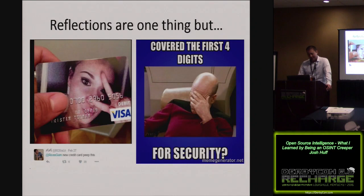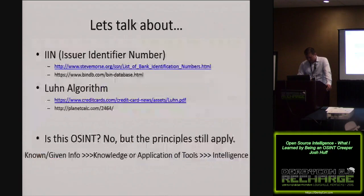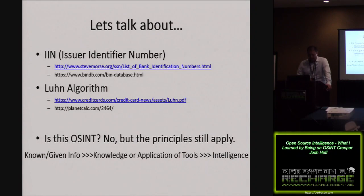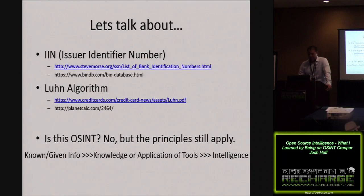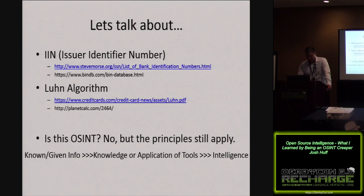This is unintelligently produced OSINT. People throwing credit card numbers out there is silly, but we see it quite often. That was a Twitter post. Thinking with an OSINT mindset, we can research things like issue identifier numbers. Several different websites explain the first six digits of a credit card in detail, including regions and how that impacts it. The Luhn algorithm is the way to validate whether a credit card number is mathematically valid. Is that part of OSINT? Not really, but the principles still apply — we're taking known information, applying knowledge or tools, and producing intelligence.